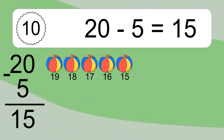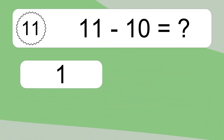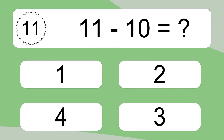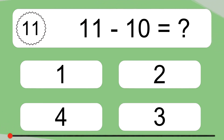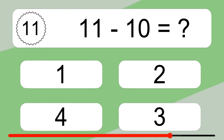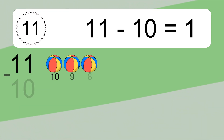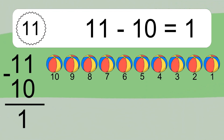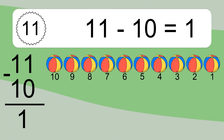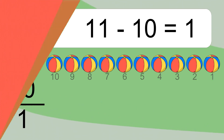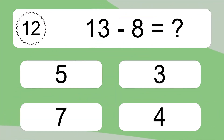11 minus 10 equals what? 11 minus 10 equals 1. Let's count it: 10, 9, 8, 7, 6, 5, 4, 3, 2, 1.